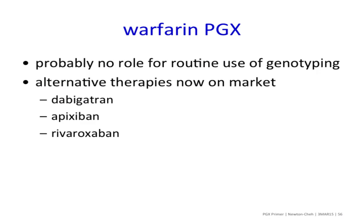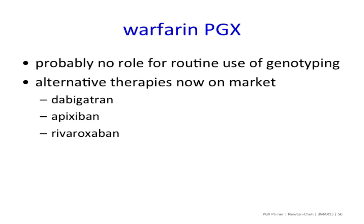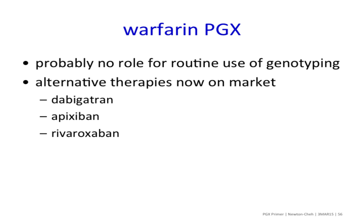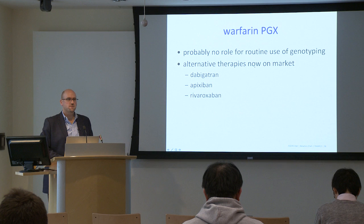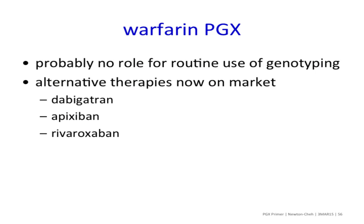There's probably no role for routine genotyping for Warfarin, and now there are alternative therapies on the market — dabigatran, apixaban, rivaroxaban, and additional agents — that have a wider therapeutic window and allow fixed dosing because there's not so much variability in dose required. It's another example where by the time we figured out whether genotype was important for understanding Warfarin dosing, Warfarin is largely being supplanted by these novel anticoagulants. While genetic variation does play a role in drug response and toxicity, we have to be quick to recognize those effects in a time scale meaningful for application.